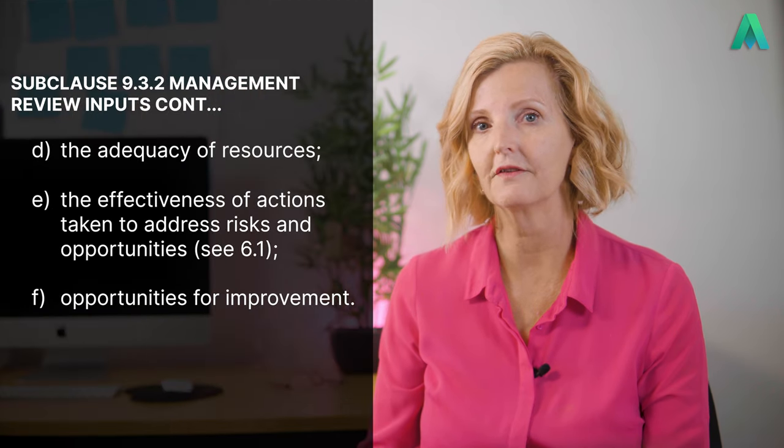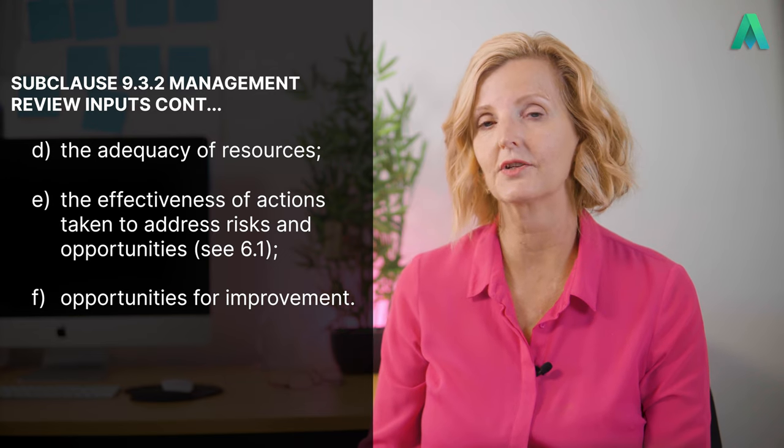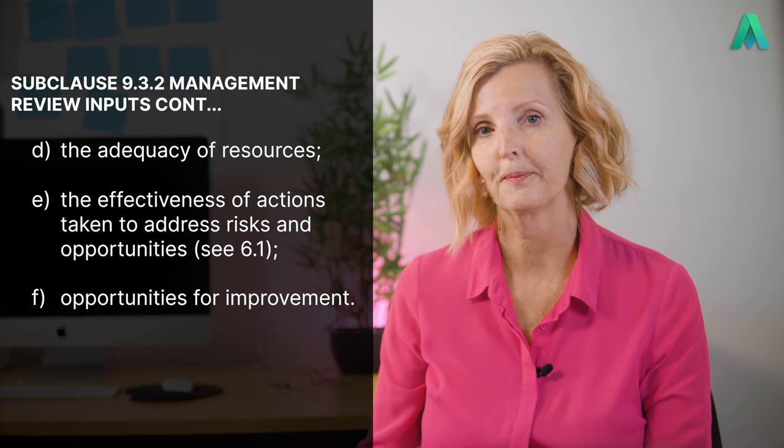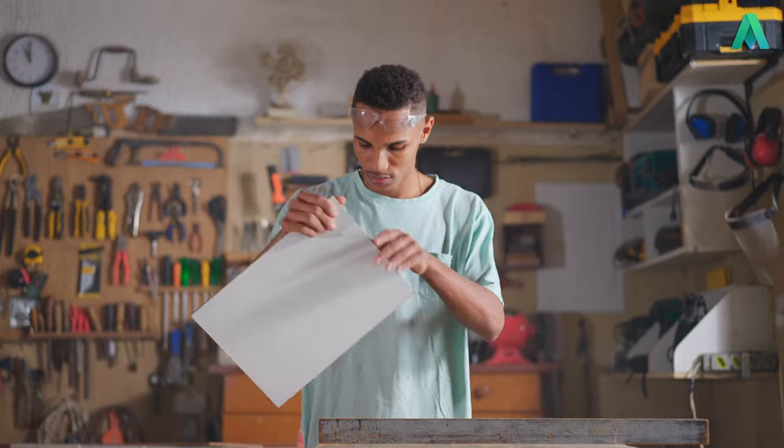Clause 8.4 is a three-part clause that goes into great detail about what needs to be in place before the performance of external providers can be reviewed. There are now just three more considerations for this sub clause: (d) the adequacy of resources, (e) the effectiveness of actions taken to address risks and opportunities, and (f) opportunities for improvement. Top management need to also review whether there are sufficient resources to maintain and improve the performance of the quality management system. Resources can be people, equipment, hardware, software, tools, and communication requirements.